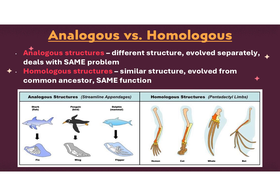An analogous structure — 'AN' like 'anti,' meaning not — is a structure where the structure is different, evolves separately, but fixes the same problem. An example is the body shapes of marine animals: a shark, a penguin, and a dolphin live in the same environment, do not have a common ancestor, but have similar fin and body structures because they need to swim fast. That body structure and fin shape, which are analogous to each other, solve the same problem even though they didn't have a common ancestor.